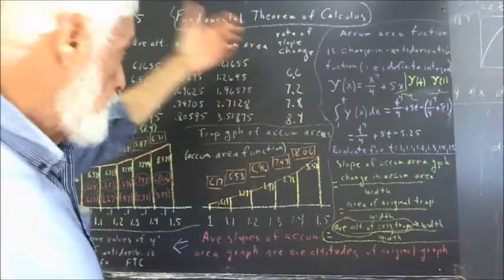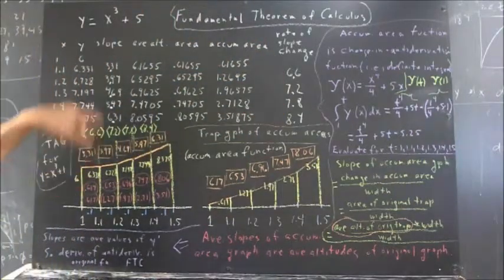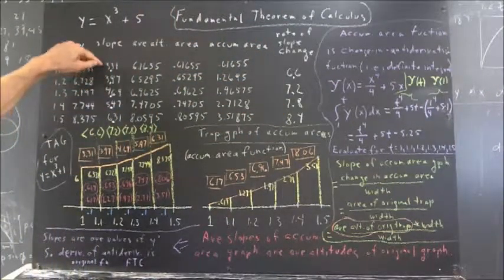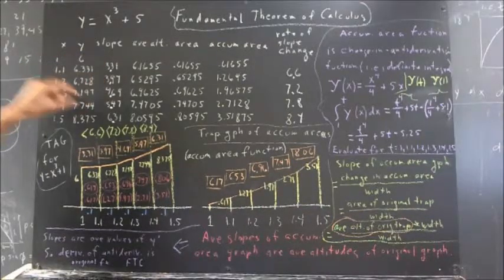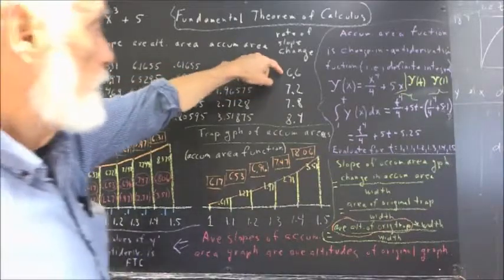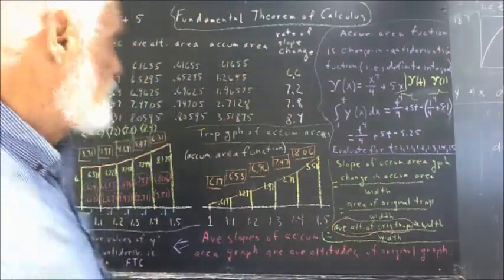The rate of slope change is easily understood. We just take this slope minus this slope for example. The difference is 0.66 divided by the width of the trapezoid and we get the rate of slope change which is 6.6.